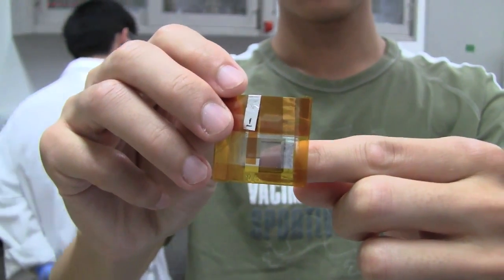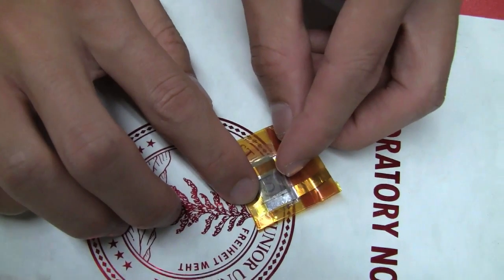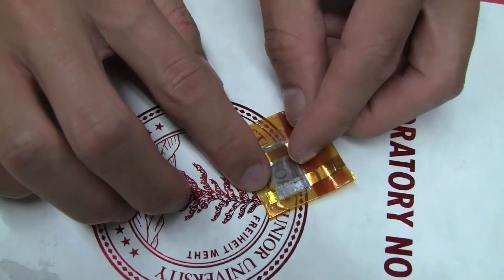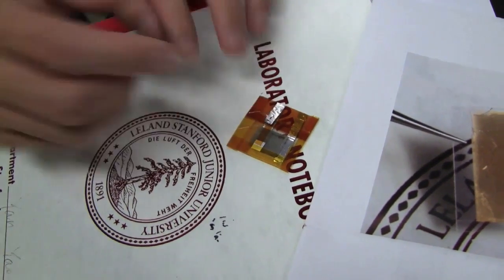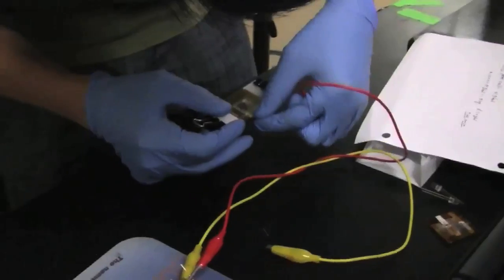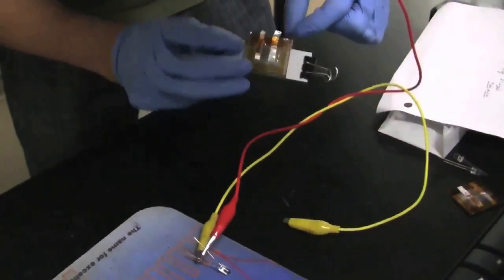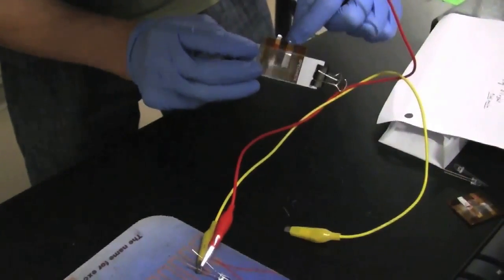The motivation is to enable cool gadgets such as totally transparent cell phones. Other researchers have made transparent displays, but this is the first time a transparent energy storage device with a decent storage capacity has been demonstrated. It's the final component needed to make totally transparent electronics.